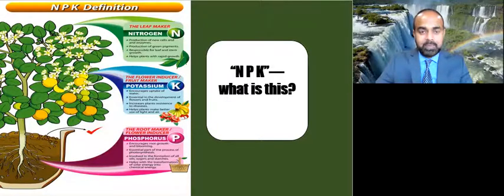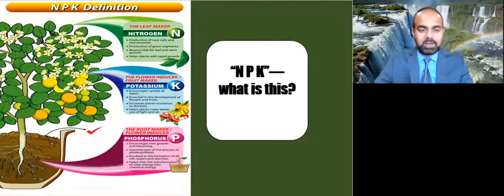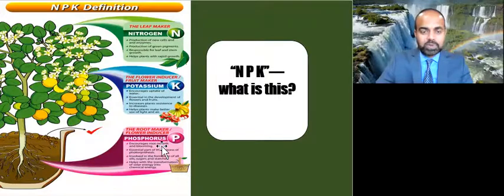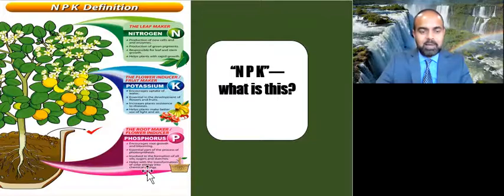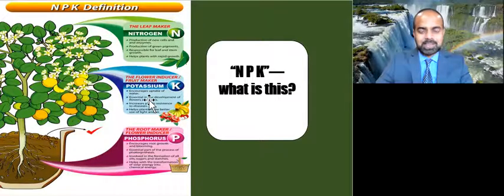Nitrogen (N) is the leaf maker. It helps in the production of new cells, enzymes, and green pigments, and is responsible for leaf and stem growth. Phosphorus (P) is the root maker and flower inducer — it encourages root growth and blooming, is essential to photosynthesis, and is involved in formation of oils, sugars, and starches, and helps transform solar energy into chemical energy. Finally, potassium (K) is the flower inducer and fruit maker — it encourages water uptake, is essential in the development of flowers and fruits, increases plants' resistance to diseases, and helps plants make better use of light and air.